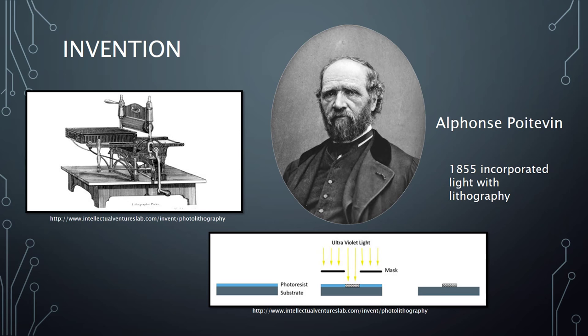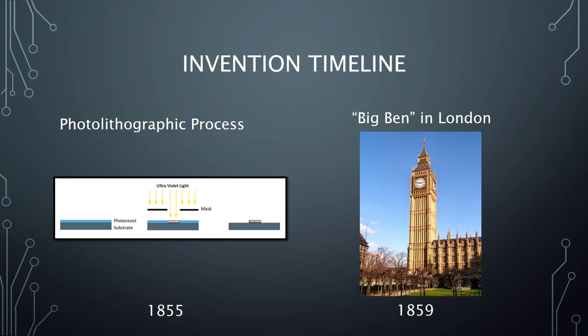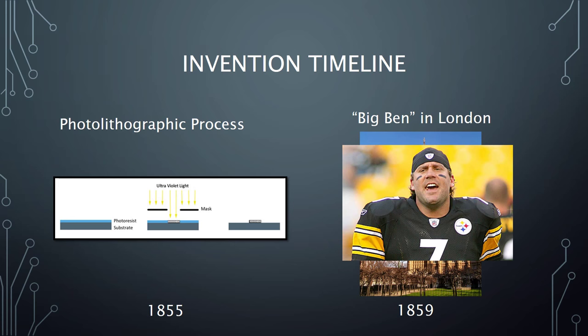Alphonse Poitvin was the man who invented the process that is still used in modern micromanufacturing today. He did this in 1855 by combining light with lithography. Just to give historical context, Poitvin invented the process four years before the completion of the iconic London landmark Big Ben - not to be confused with Steelers quarterback Big Ben Roethlisberger.